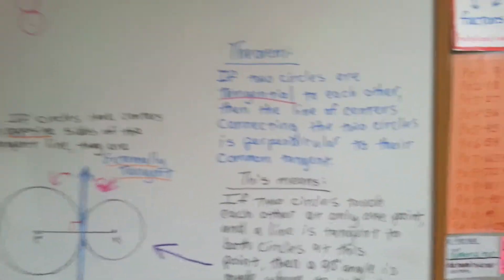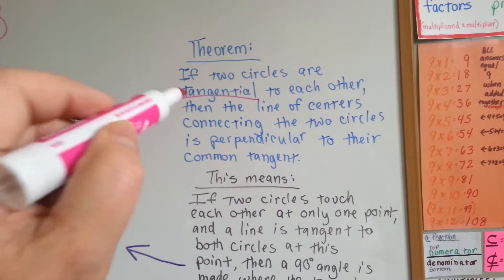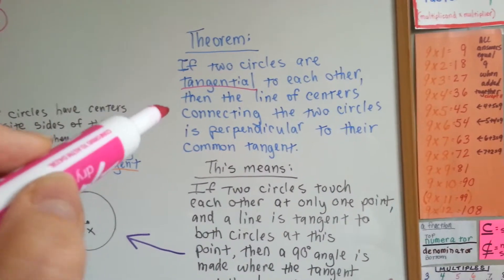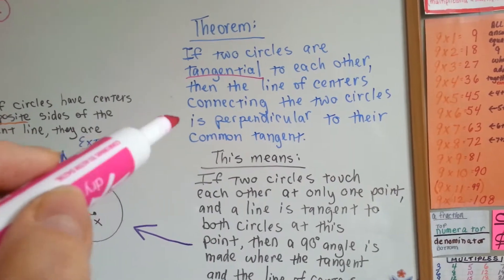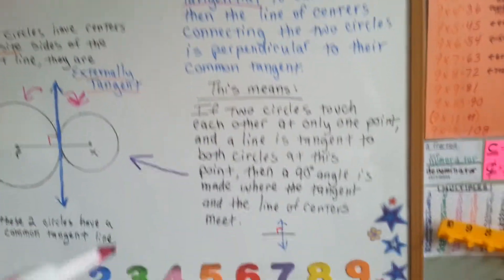So here's our theorem. If two circles are tangential to each other, then the line of centers connecting the two circles is perpendicular to their common tangent. What does that mean? Here we go.